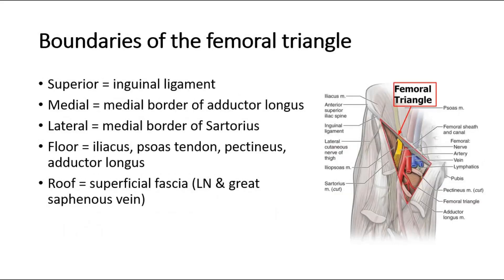The boundaries of the femoral triangle are: superiorly the inguinal ligament; medially the medial border of adductor longus; laterally the medial border of sartorius. The floor consists of iliacus, psoas tendon, pectineus, and adductor longus. Its roof is the superficial fascia.